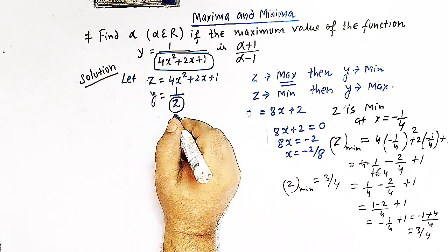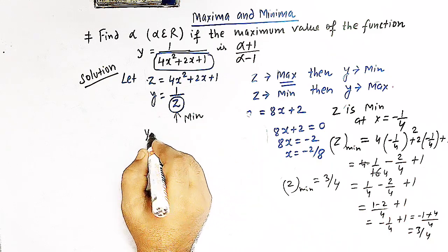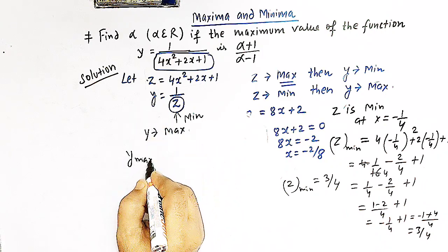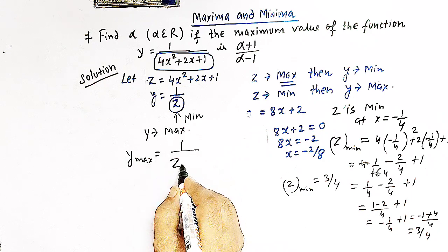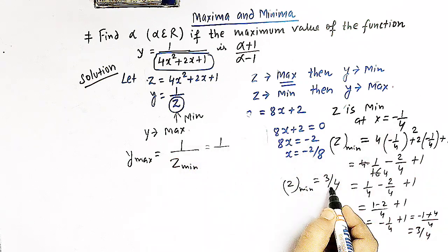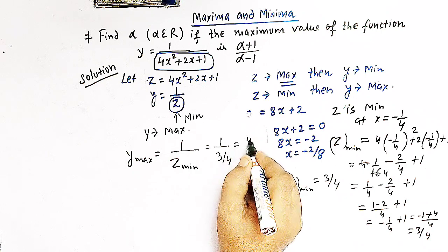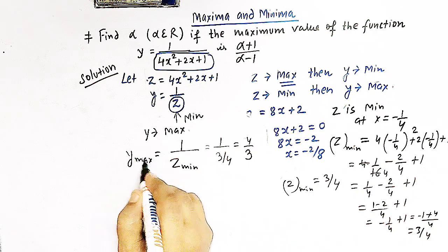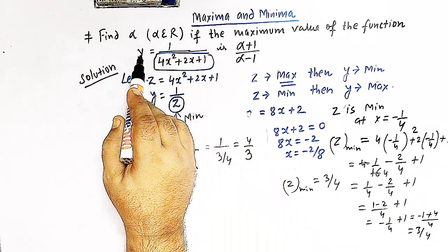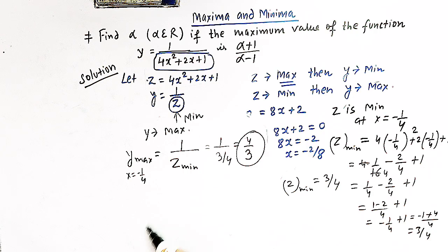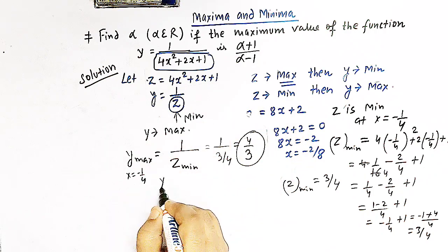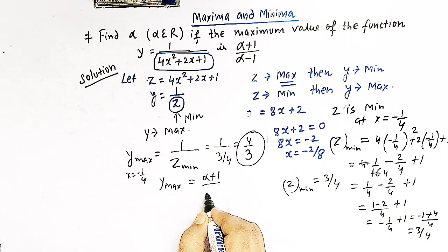Since z is minimum and y = 1/z, when z is minimum then y is maximum. The maximum value of y is 1/z_min = 1/(3/4) = 4/3. So y is maximum at x = -1/4, and the maximum value of y is 4/3. We are given that the maximum value of this function is (alpha + 1)/(alpha - 1), so y_max = (alpha + 1)/(alpha - 1).